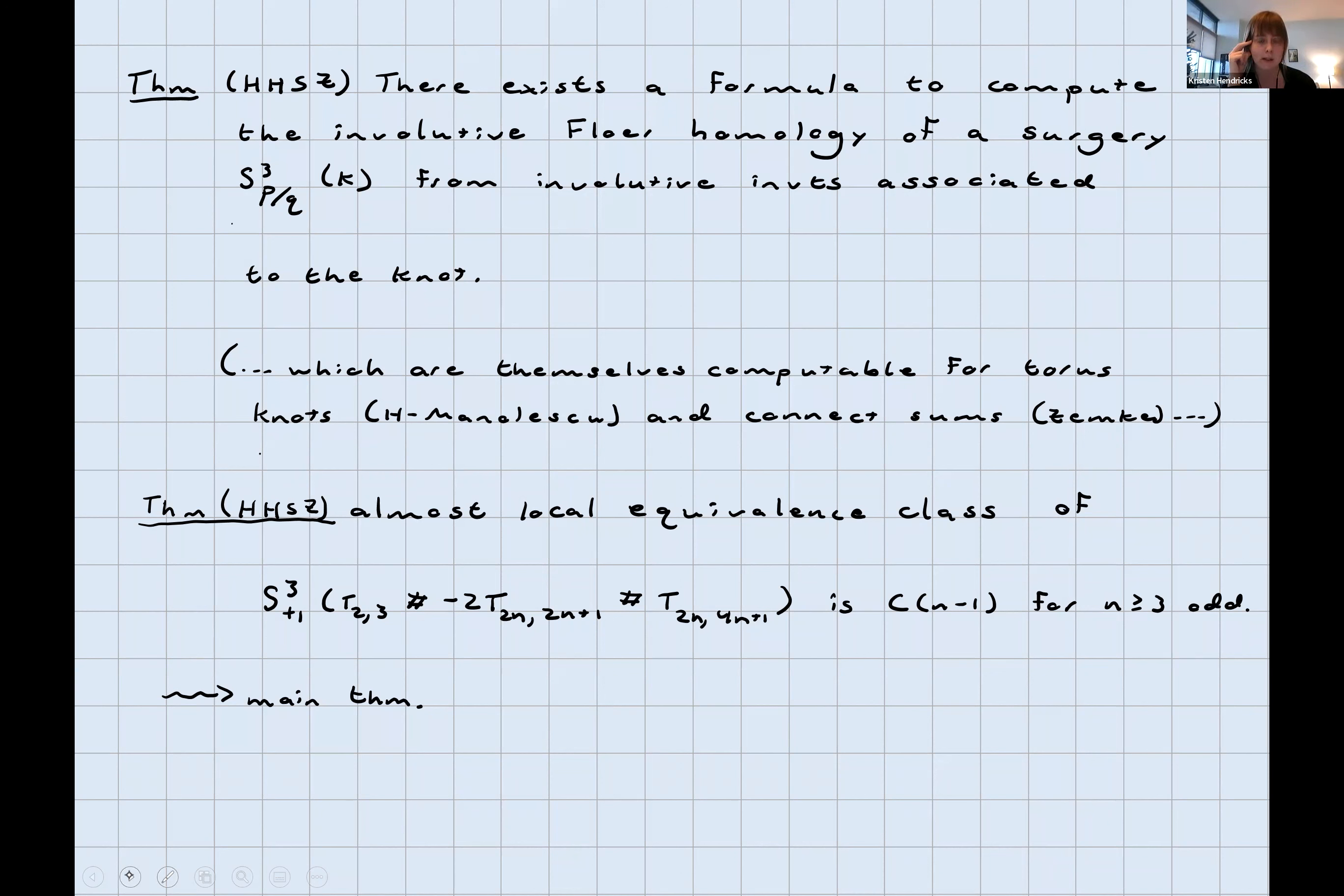Which means that the theorem here is that the almost local equivalence class of those three manifolds I mentioned earlier, plus one surgeries on T23 connect sum minus two copies of T2N, 2N plus one, connect sum a copy of T2N, 4N plus one. The almost local equivalence class of that is actually Cn minus one from the previous page for n greater than or equal to three, some odd number, and there are infinitely many of those. That gives the main theorem that there's a Z infinity subgroup that sits inside of theta 3Z quotiented by theta 3SF. That finishes that up.